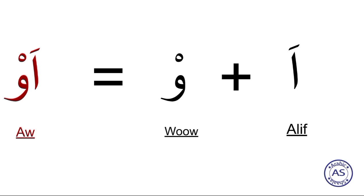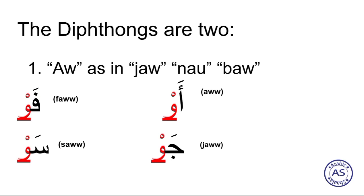Here we have an example where the first letter is Alif and the second letter is Waw. The first letter with vowel sign Fatha is merging into the second letter Waw. It is pronounced softly as 'Oh'. Diphthongs ka second name humara soft vowels hai. Pronounced softly: Oh.